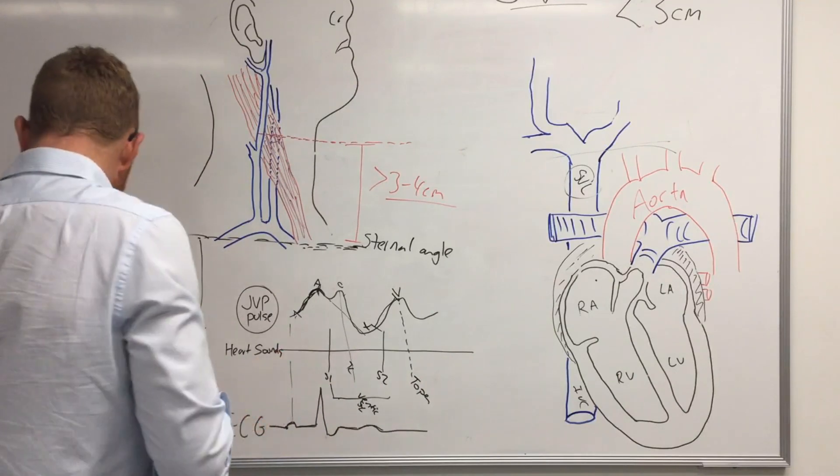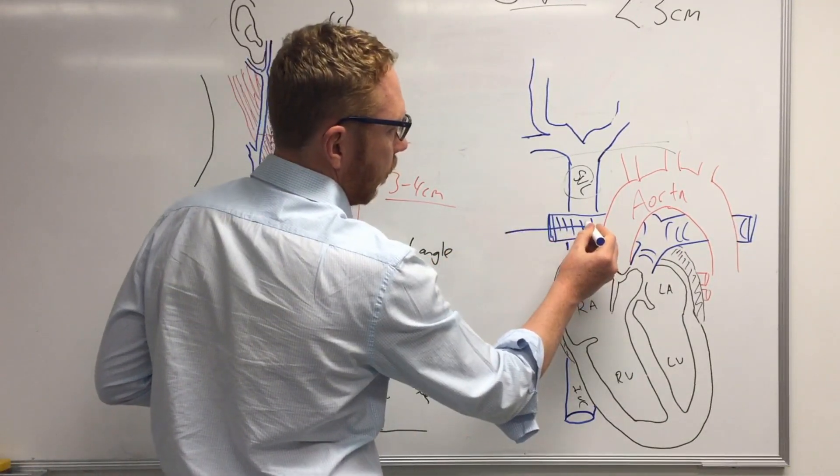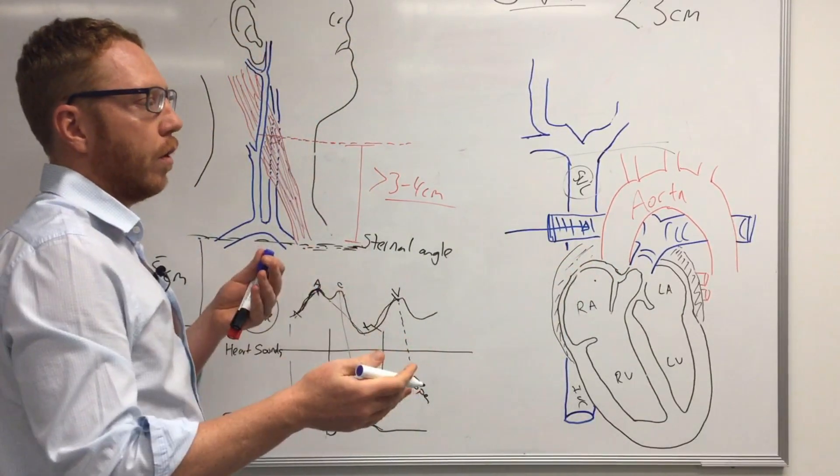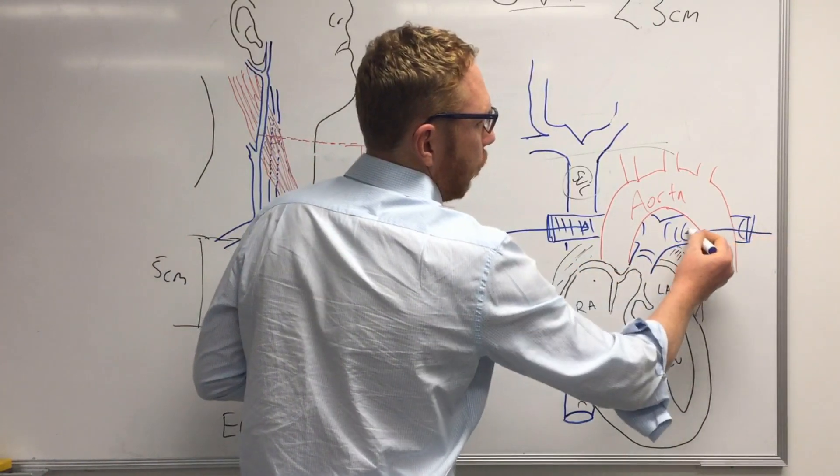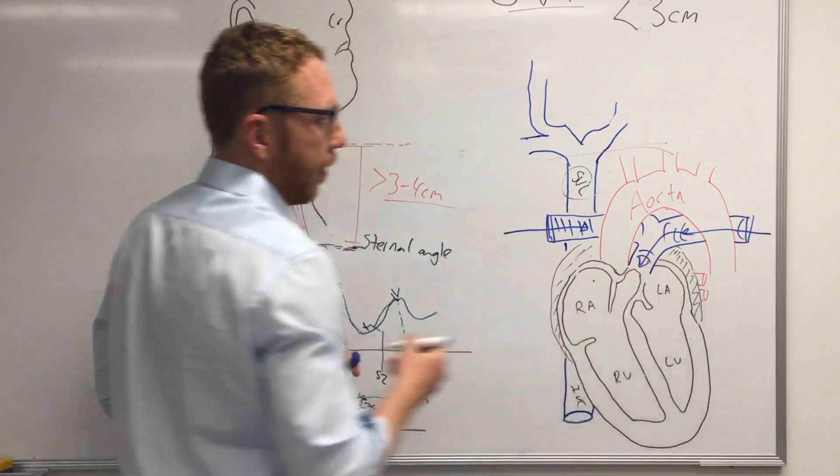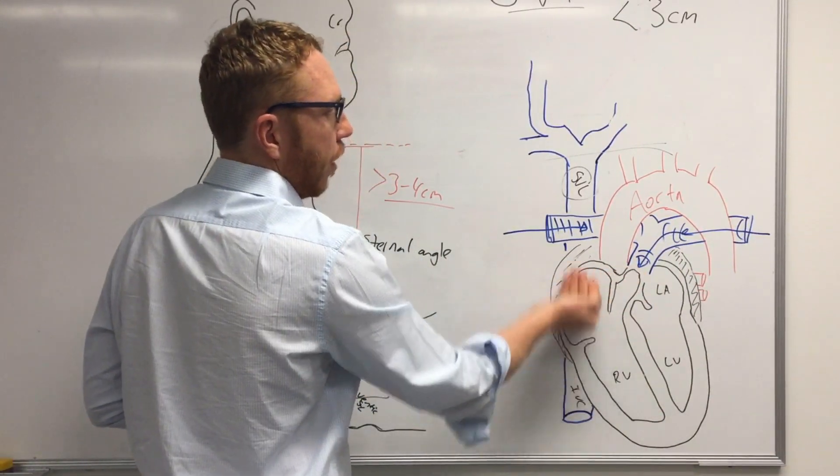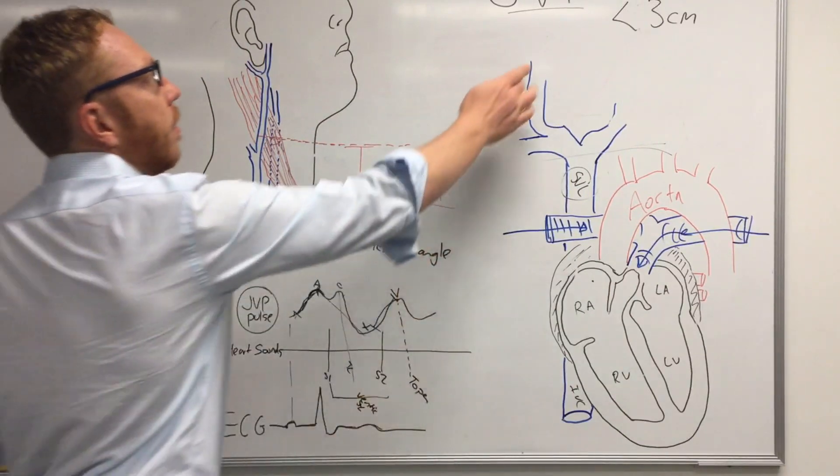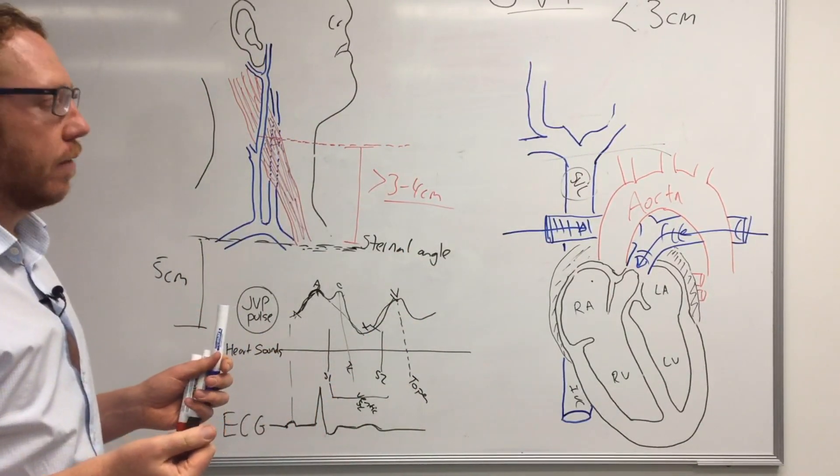Or if you've got certain lung conditions like COPD, we get a VQ mismatch and so pressure will build back into the pulmonary system. So this is pulmonary hypertension and that's going to build back into the right ventricle, which will go back in the right atria, go back into the SVC, go back into the internal jugular. Another reason for increase in JVP.